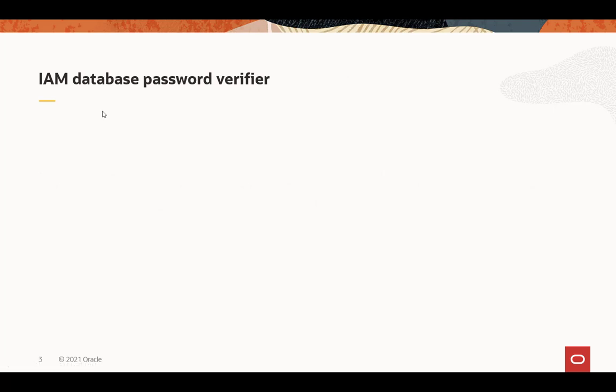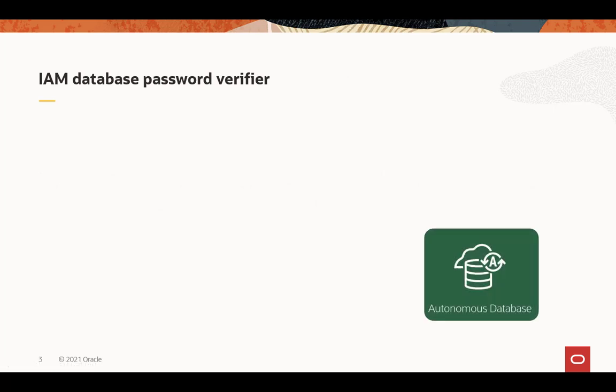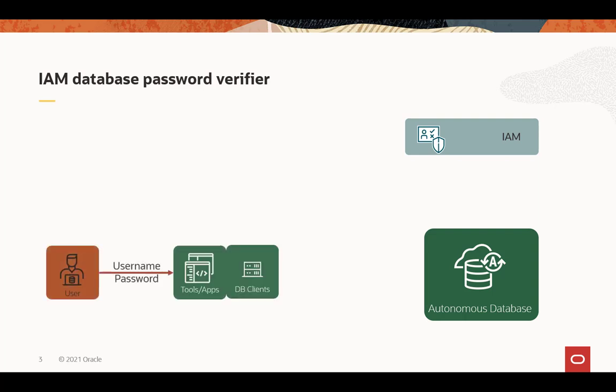There are two mechanisms to access the database. The first is the IAM Database Password Verifier. The Autonomous Database is enabled and configured for IAM integration. The user will use existing database clients, tools, and apps — no change is required as long as they can work with 12C passwords. That means 12C database clients or above, or patched to work with 12C verifiers. The user logs in with their IAM username and password, not the database username and password.